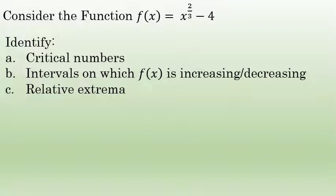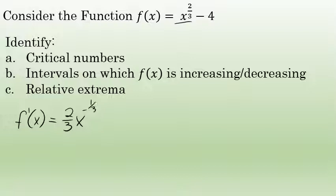We'll start with the critical numbers. The critical numbers are x-values where the first derivative is either equal to zero or where the first derivative doesn't exist. The derivative of f(x) is fairly straightforward — I can use the power rule to find the derivative of x^(2/3), which yields (2/3)x^(-1/3), and the derivative of negative four is zero, so I won't include a second term.